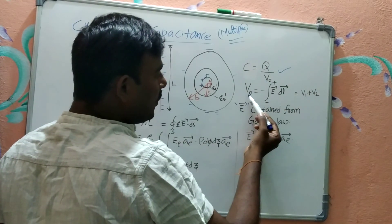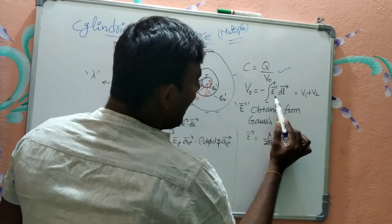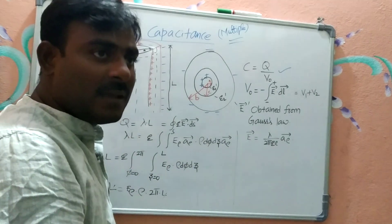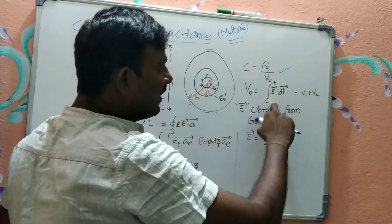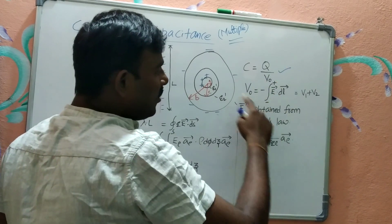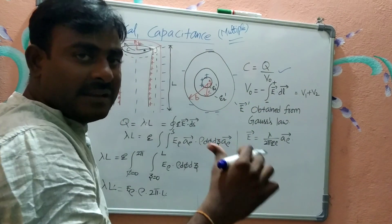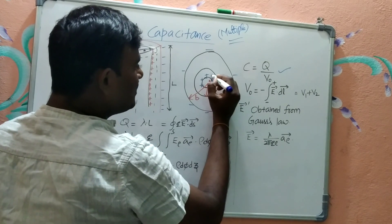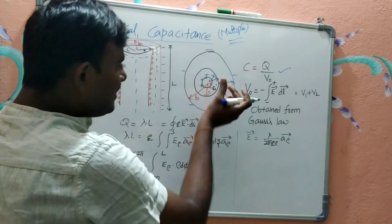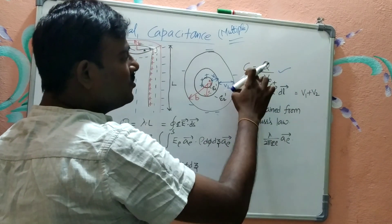To find the potential difference, we use the relation V₀ = −∫ E · dl. To get a positive value, we move from the negatively charged conductor to the positively charged conductor. The total potential V₀ between the inner and outer conductor is divided into two parts: V₁ and V₂. Finding these two potentials gives us the total potential difference, and from that along with the charge we can find capacitance.